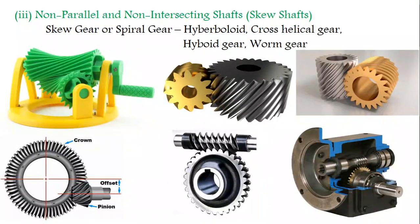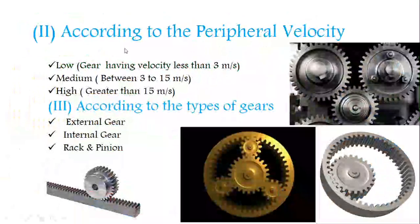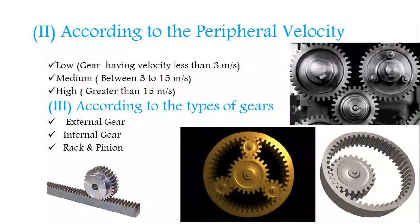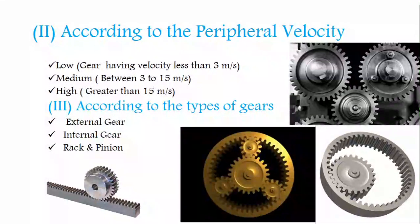This kind of arrangement is called a non-parallel and non-intersecting shaft or skew shaft arrangement. The next classification is according to the peripheral velocity. Gears are classified into three types: low velocity — less than 3 meters per second; medium velocity — between 3 to 15 meters per second; and high velocity — greater than 15 meters per second.